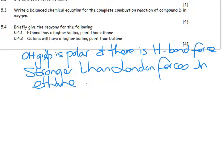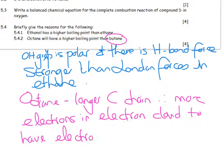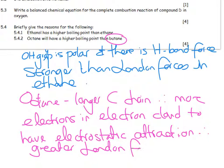Then for octane, we have a higher boiling point than butane. Octane has a longer carbon chain, therefore more electrons in electron cloud to have electrostatic attraction, therefore greater London forces. They're both London forces, but the London forces are stronger in the longer molecule than in the shorter molecule.